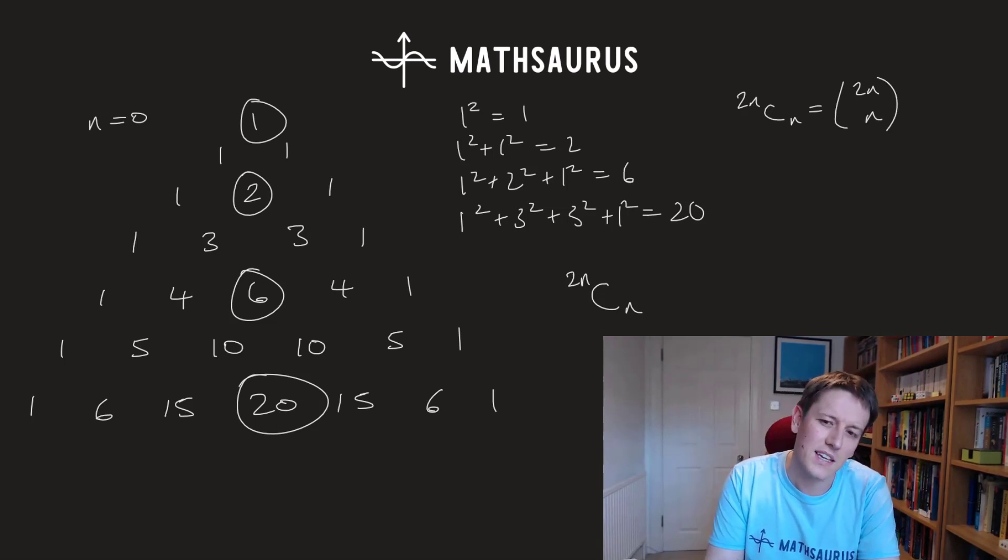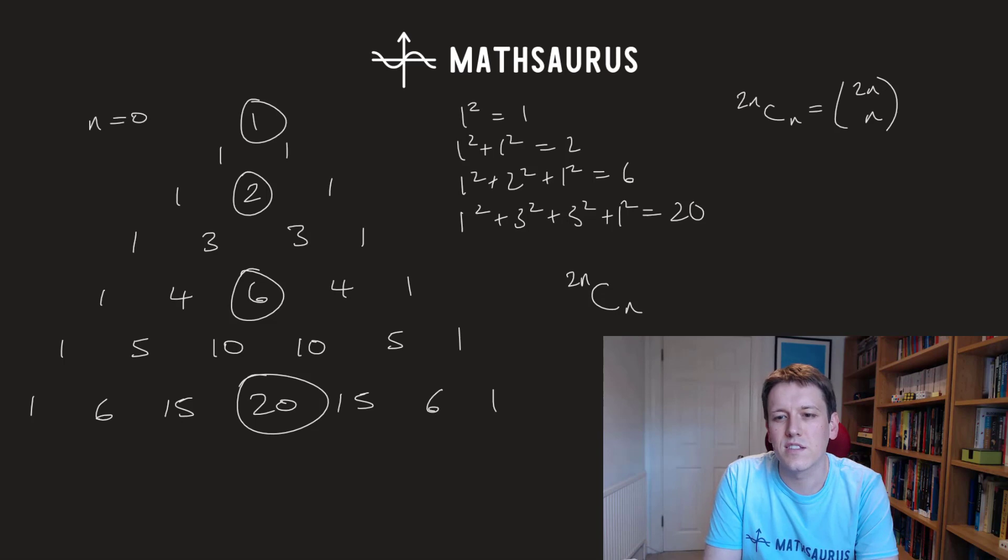So what I'm saying here is that I'm hypothesizing that this number here is just the sum of the squares of the nth row of Pascal's Triangle. So n choose 0 squared plus n choose 1 squared all the way up to n choose n squared.